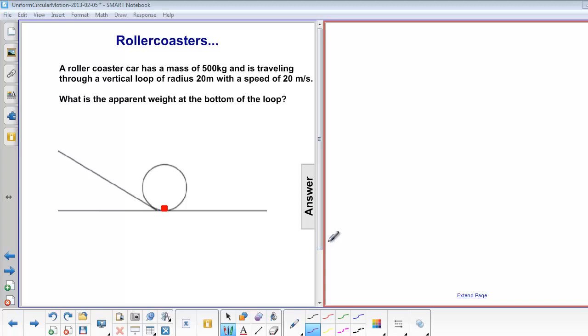A roller coaster car has a mass of 500 kilograms and is traveling through a vertical loop of radius 20 meters with a speed of 20 meters per second. What is the apparent weight at the bottom of the loop?